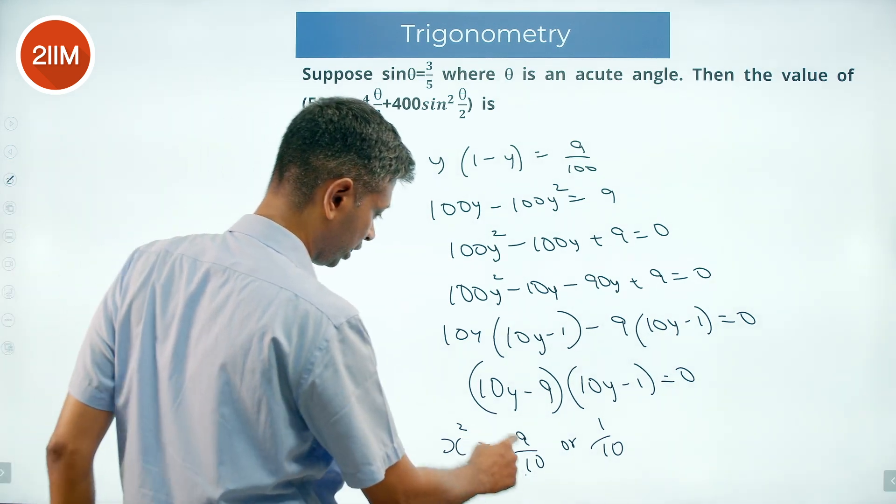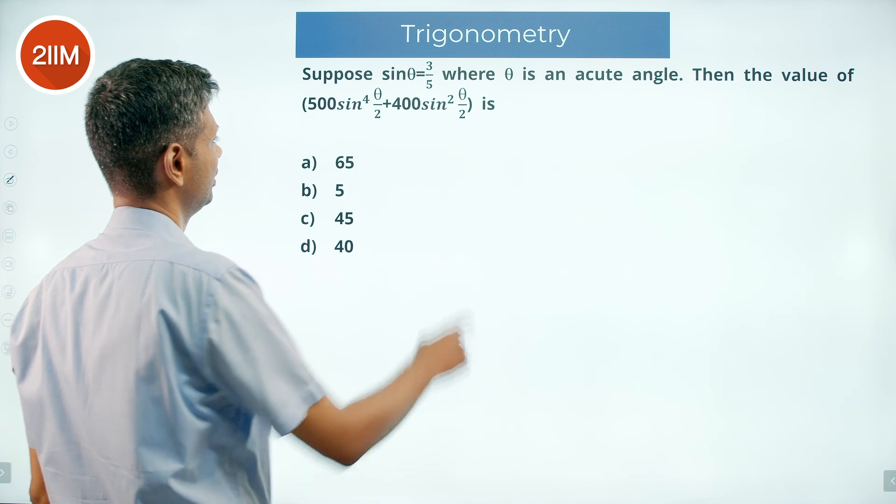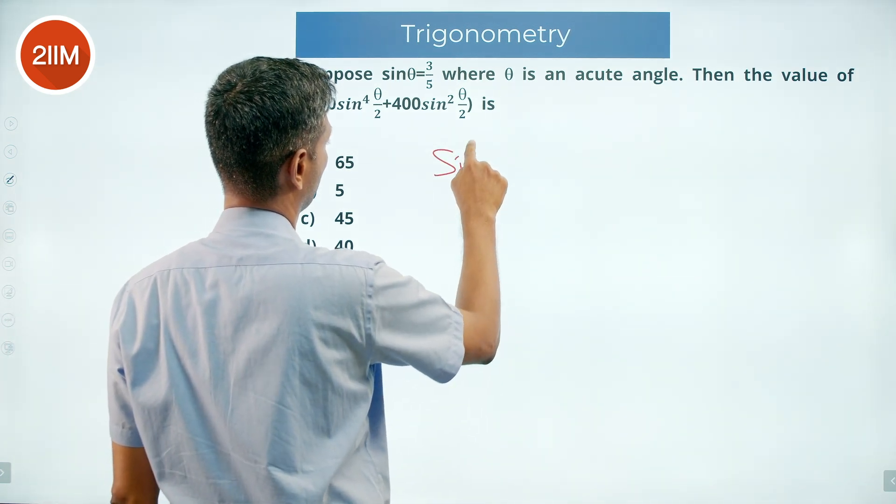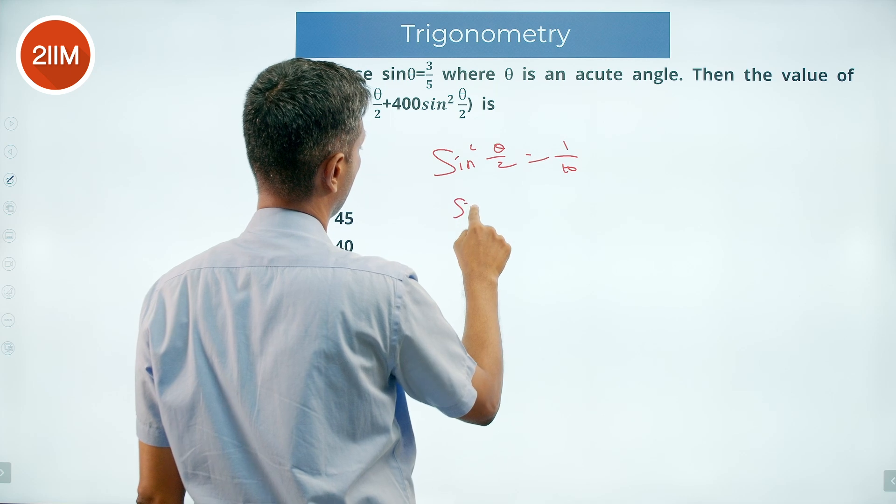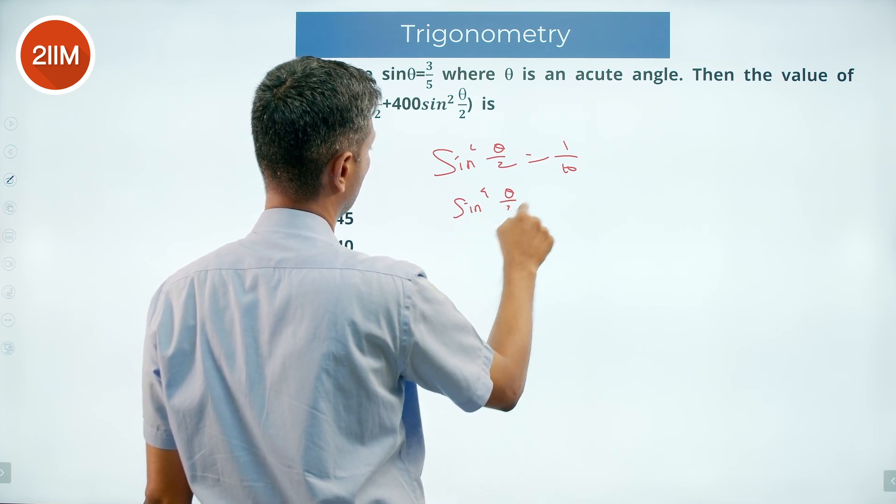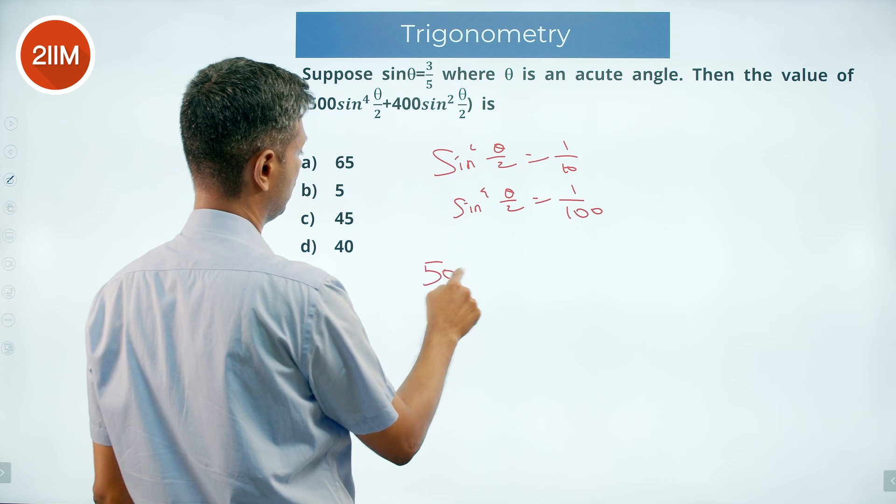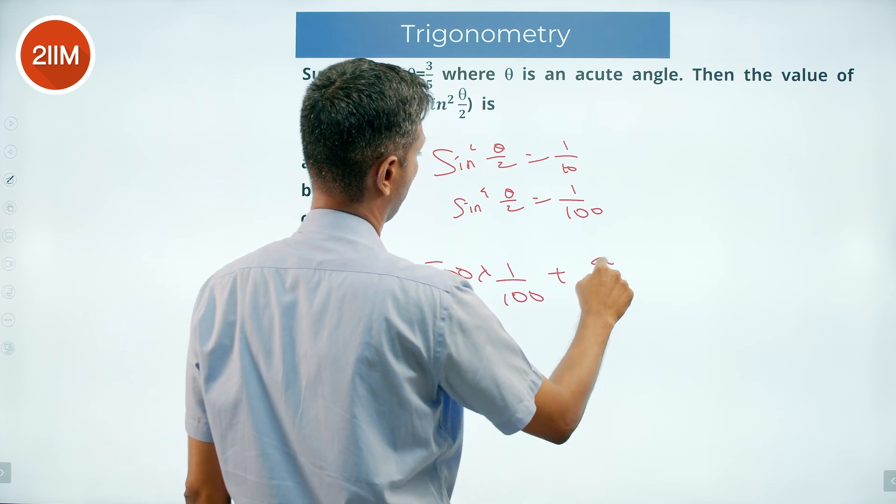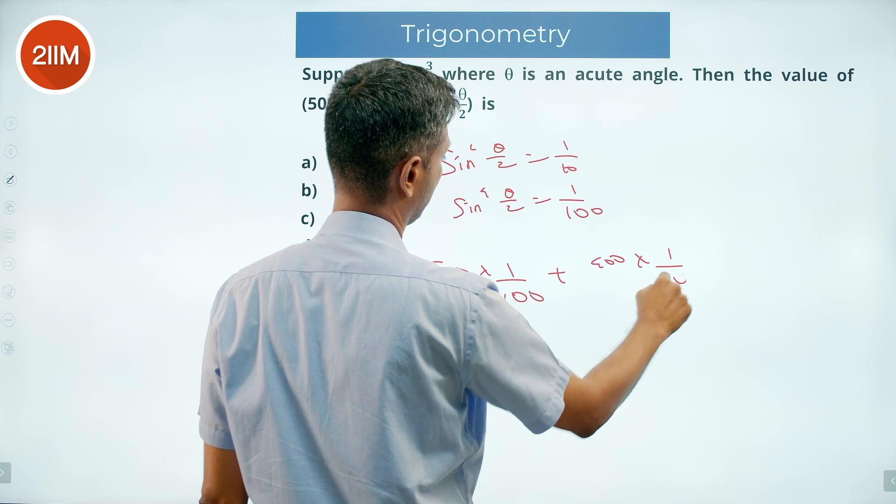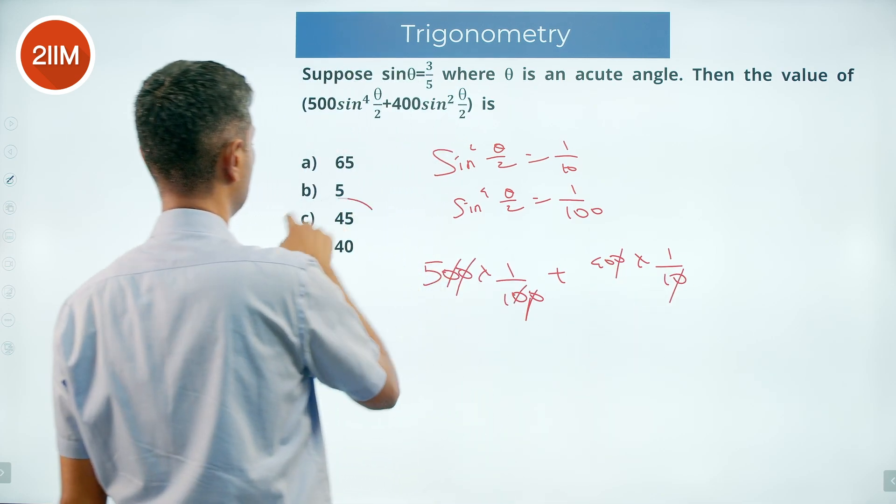It is only 1 by 10. Now this becomes routine. Sine square theta by 2 equals 1 by 10. Sine power 4 theta by 2 equals 1 by 100. So this is 500 into 1 by 100 plus 400 into 1 by 10. This is 5 plus 40, which equals 45.